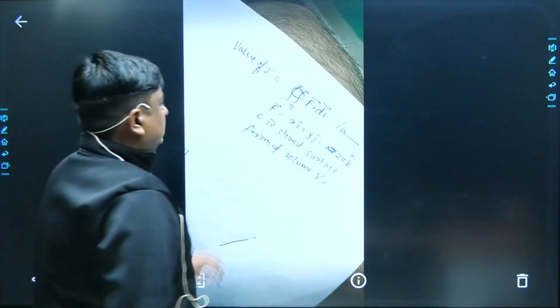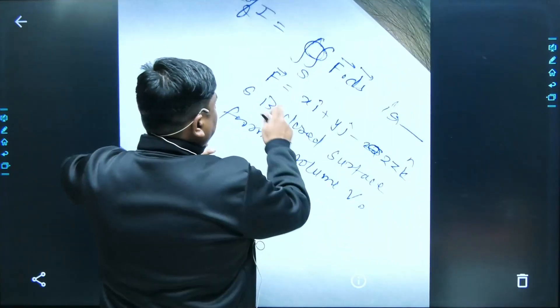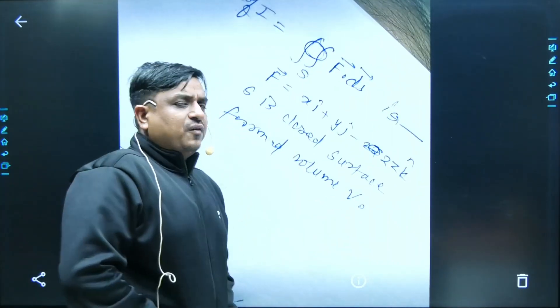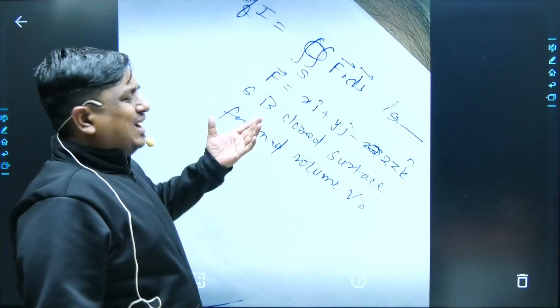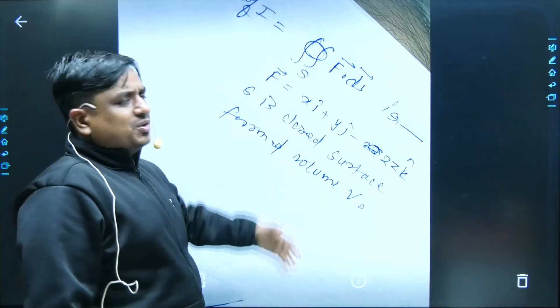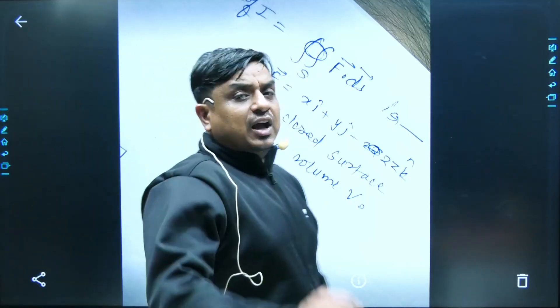Here a vector field F vector has been given. We need to find its closed surface integration. My dear friend, if you have to find its closed surface integration, you can use Gauss divergence theorem. Once you take divergence of it, that becomes zero, so obviously closed surface integration is also zero.